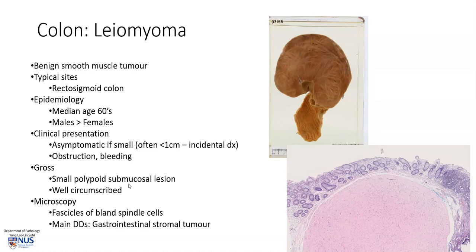Grossly, if they are small, they tend to be polypoid submucosal lesions protruding beneath the mucosa, and they are very well circumscribed, as you can see here. On microscopy, we would see fascicles or parallel bundles of bland spindle cells. I will have a separate video on the microscopic features of leiomyoma.